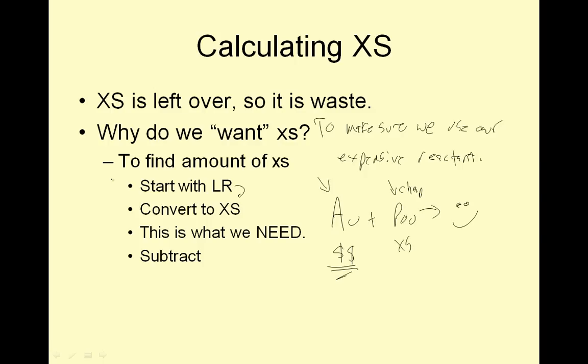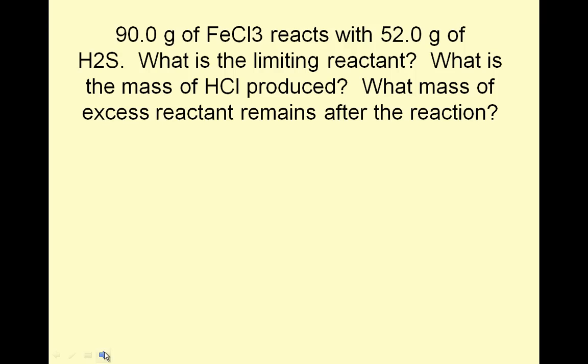Start with the limiting reactant. Convert to your excess. That's what we need. Subtract. Now we're going to do a couple more. 90 grams of FeCl3 reacts with 52 grams of H2S. What is the limiting reactant? What is the mass of HCl produced? What mass of excess reactant remains?